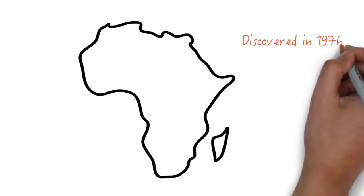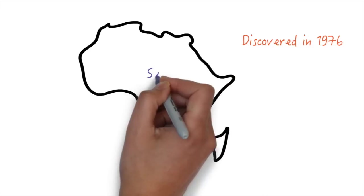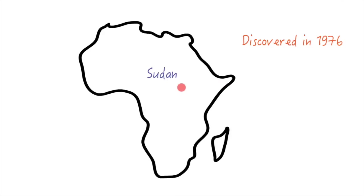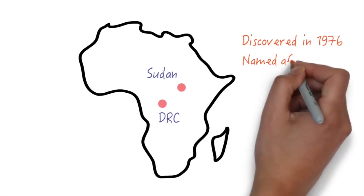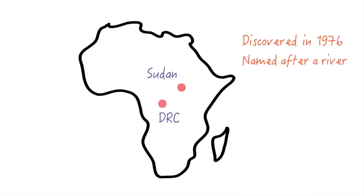The virus was first discovered in 1976 after a couple of outbreaks in Africa. One was in Sudan, and the other was in a small village in what is now known as the Democratic Republic of Congo. That village was near a river called the Ebola River, from which the virus gets its name.